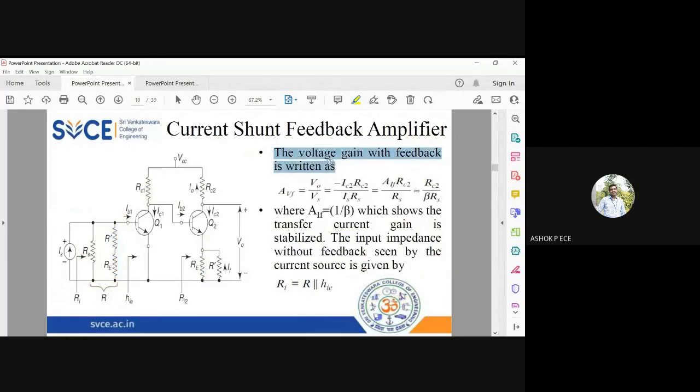This amplifier will also have a voltage gain avf equal to v naught by vs. V naught is minus ic2 into rc2, v is equal to is into rs, and ic2 by is is going to be aif. So aif into rc2 by rs, which is going to be rc2 by beta into rs. The current gain is inversely proportional to beta, so rc2 by beta into rs - these are all approximate things.